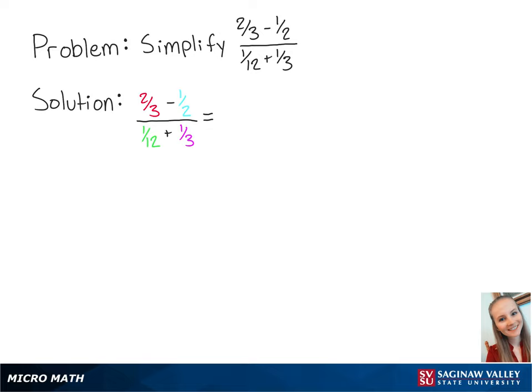To subtract the fractions in the numerator, we need to find a common denominator. The least common multiple of 3 and 2 is 6, so we can use 6 as the common denominator.